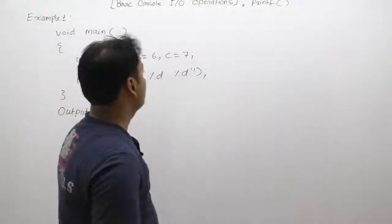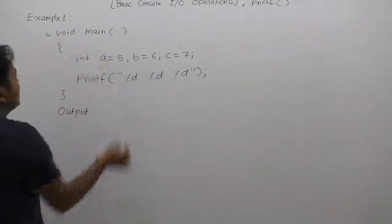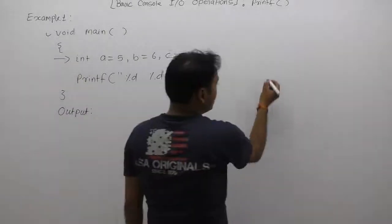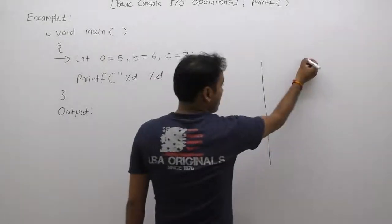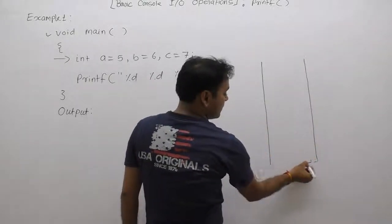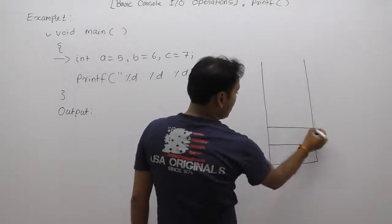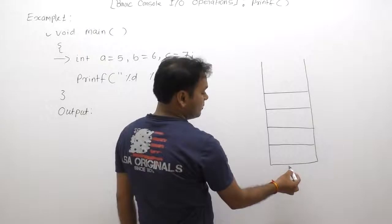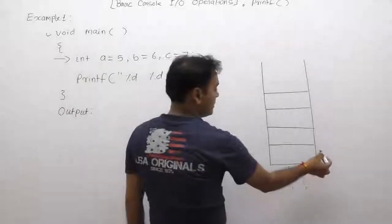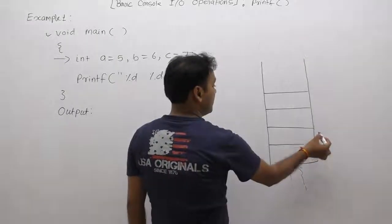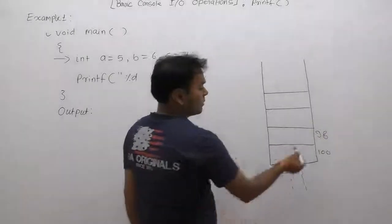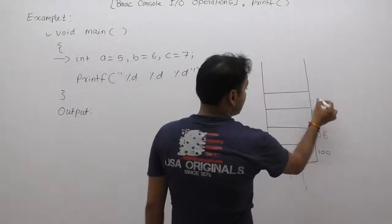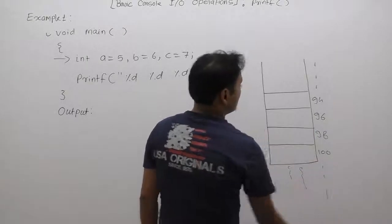Before executing this program, we are declaring three variables. As we know, all local variables are created on top of the stack memory. We are managing the stack with these reserved locations. Top of the stack, we are assuming location 100, taking two byte blocks inside the stack for these integers: 198, 96, 94, and so on.